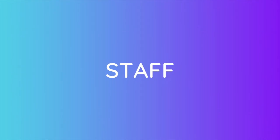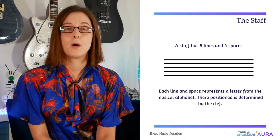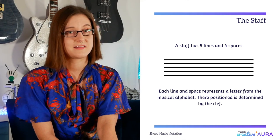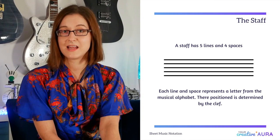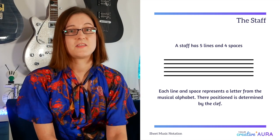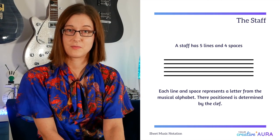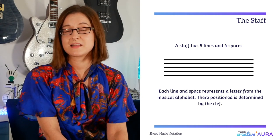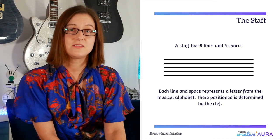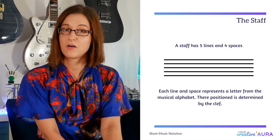The staff is a template on which music is written. It has five lines and four spaces and looks like this. Each of these lines and spaces represents a letter from the musical alphabet. However, where these letters are positioned on the staff is dependent on which clef is present at the beginning of the staff.